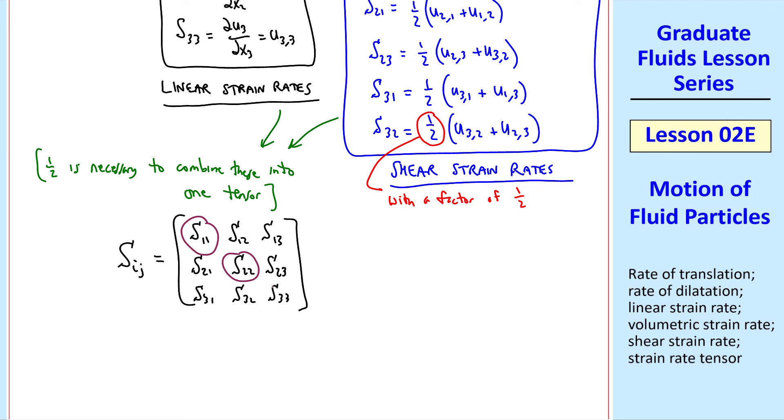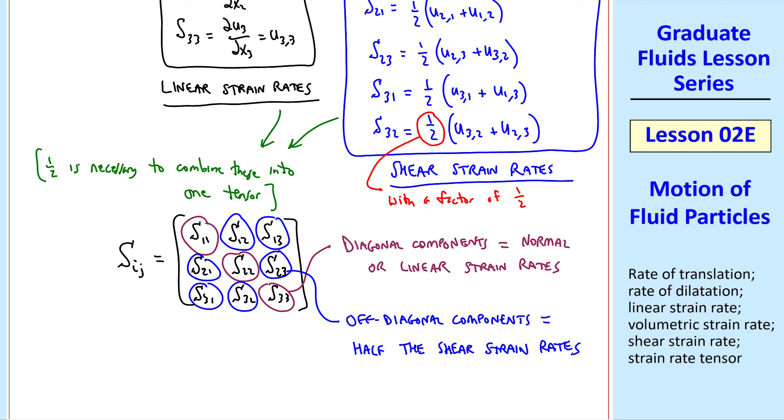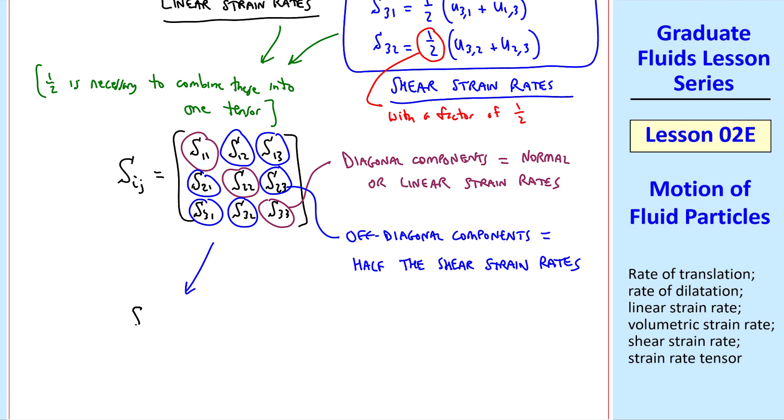We see that the diagonal components are the normal or linear strain rates, and the off-diagonal components equal half the shear strain rates. Finally, in tensor notation, we write this second order tensor as one-half del ui del xj plus del uj del xi.